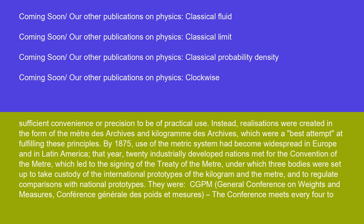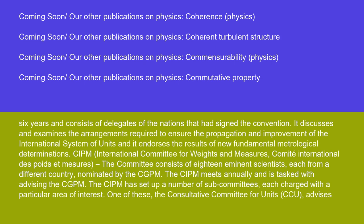By 1875, use of the metric system had become widespread in Europe and in Latin America. That year, 20 industrially developed nations met for the Convention of the Meter, which led to the signing of the Treaty of the Meter, under which three bodies were set up to take custody of the international prototypes of the kilogram and the meter and to regulate comparisons with national prototypes. These were: the CGPM (General Conference on Weights and Measures), which meets every four to six years and consists of delegates of signatory nations; it discusses arrangements to ensure propagation and improvement of the SI and endorses results of new fundamental metrological determinations.